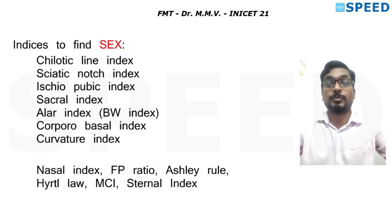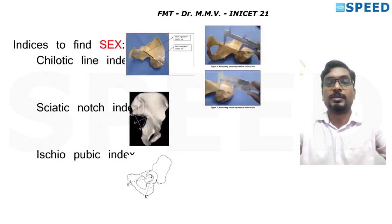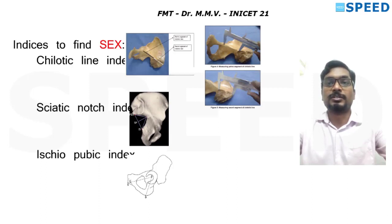Indices to find sex — or sexual dimorphism — show differences between genders. We'll go through them one by one; they're easy to remember. Starting with the most repeated MCQ: the chylotic line index. The indices are arranged in order of MCQ frequency. Chylotic line index is the ratio of the pelvic segment of the chylotic line to the sacral segment of the chylotic line.